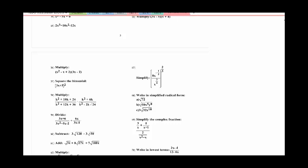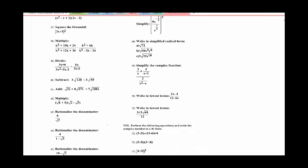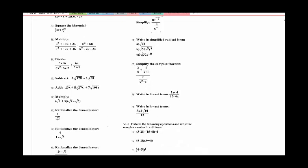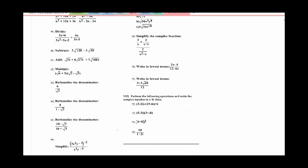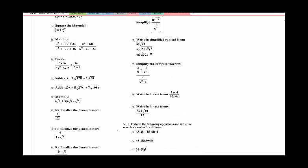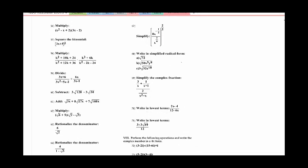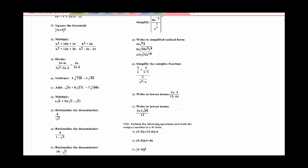58 and 59 go back to rational equations, which was test 4. Starting with number 60, we are dealing with radicals and exponents with fractions, which is test 5 material. Complex fractions was test 4. Here's test 4.